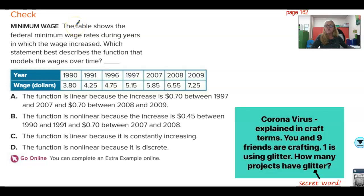The table says the federal minimum wage rates during years in which the wage increased. Which statement best describes the function that models the wages over time? Well, this was an increase here of one year. This was one year. And it went up by 45 cents. This was an increase of five years. And it went up by 50 cents. I got a bad feeling about this one. This does not appear to be linear. Increased by one. Increased by 40. Yeah. No, this is not linear. So which one of these best describes it? The function is linear because, you know, we already decided it's not linear. The function is nonlinear because the increase is 45 cents between 90 and 91 and 70 cents between 07 and 08. We didn't even go that far. We knew it was wrong before we got there. B is the correct answer.